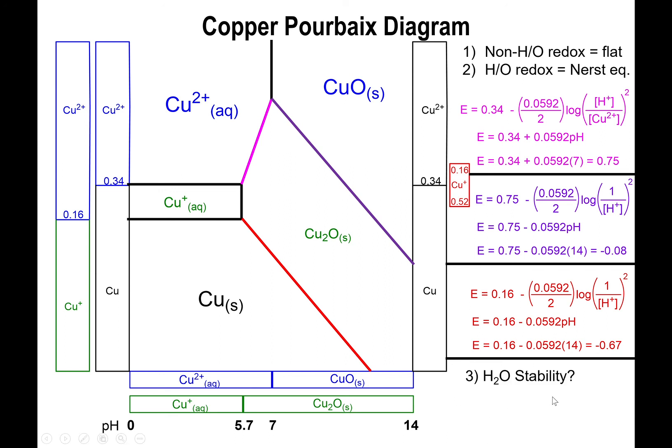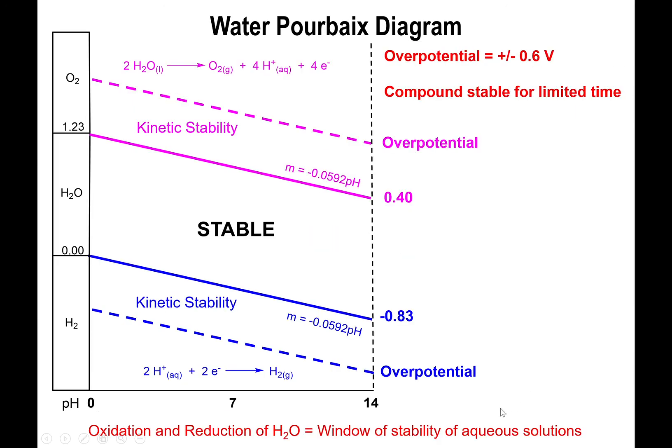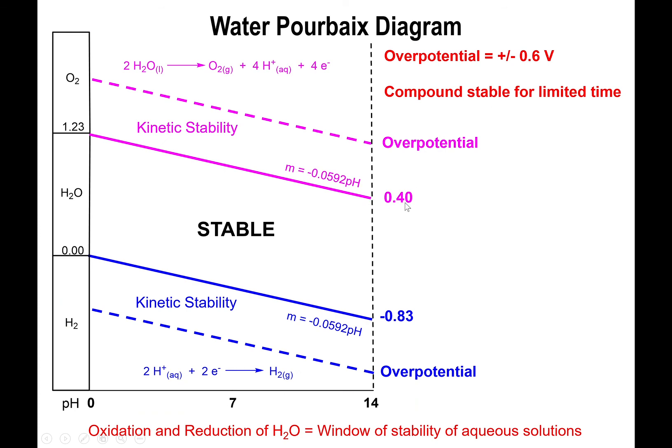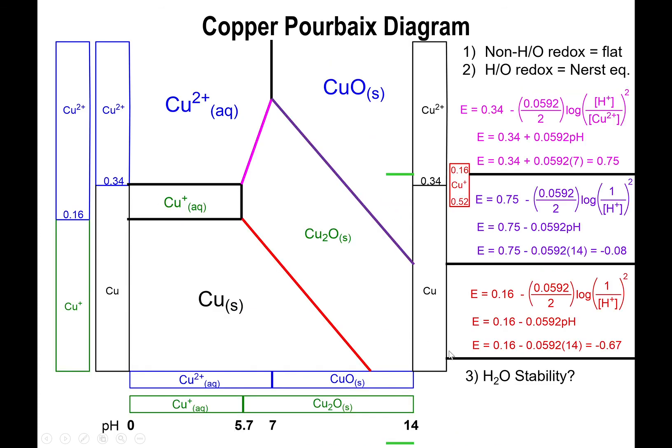And pretty much you have the value right here, which is the boundary for your 0.4 potential. And so you're only going down to negative 0.67. Technically speaking, everything in here falls within the stability of water. So everything here is stable in water.